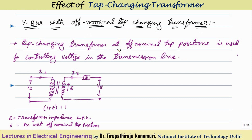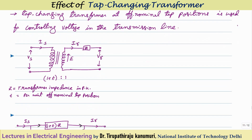Generally, a tap changing transformer is provided in the transmission line in order to control the voltage and to maintain the terminal voltage constant irrespective of the load. The tappings are generally provided on the high voltage side.